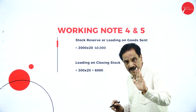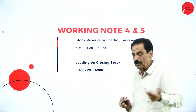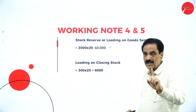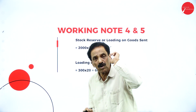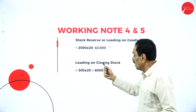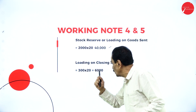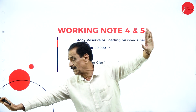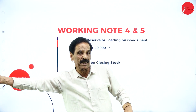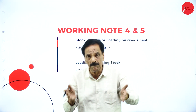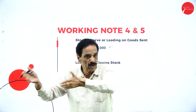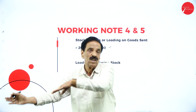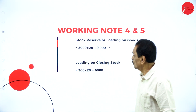Working Note 4: Stock Reserve (Loading). The real cost is Rs. 200 but the invoice price is Rs. 220 — a difference of Rs. 20 per vehicle. For 2,000 vehicles sent, stock reserve on goods sent = 20 × 2,000 = Rs. 40,000. Loading on closing stock: 300 unsold vehicles × Rs. 20 = Rs. 6,000. While doing the problem, goods sent to consignee comes to the debit side; stock reserve comes to the credit side. Closing stock comes to the credit side and stock reserve on closing stock comes to the debit side.